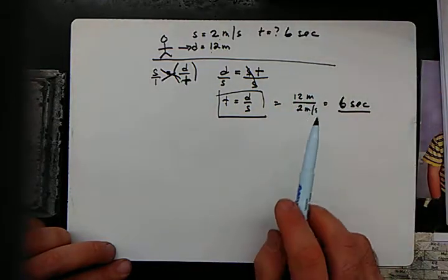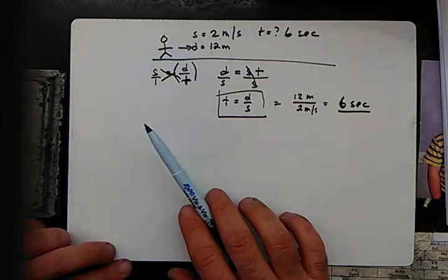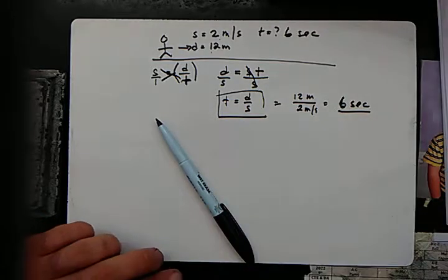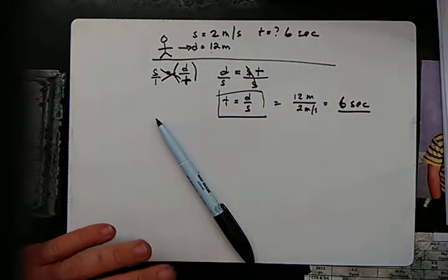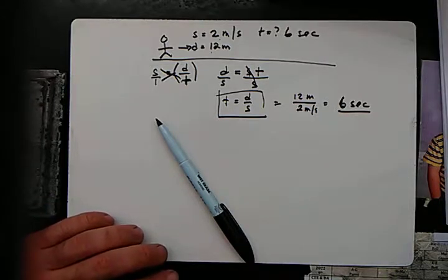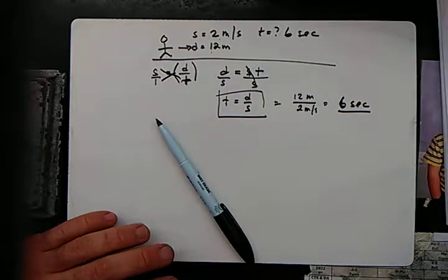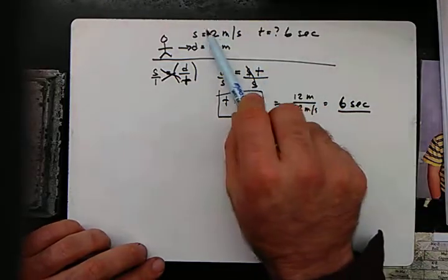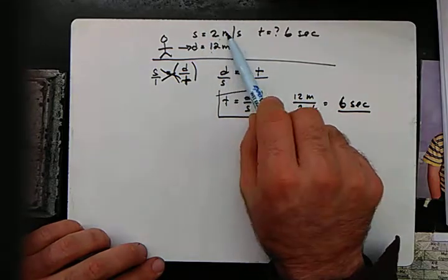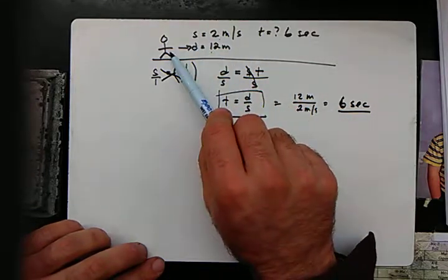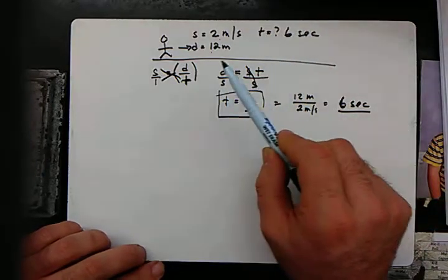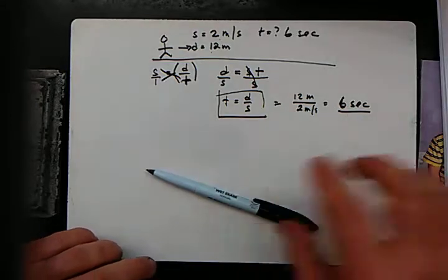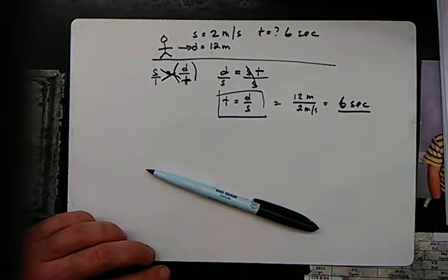You may be looking at these problems and saying they're pretty easy — most people can do this in their heads. But I want you to let the physics do it. Write down your knowns, draw a picture, write your unknowns, come up with a formula, and then get an answer. That's the process of physics.